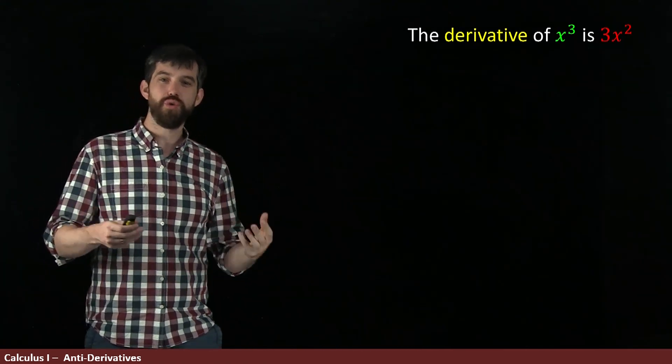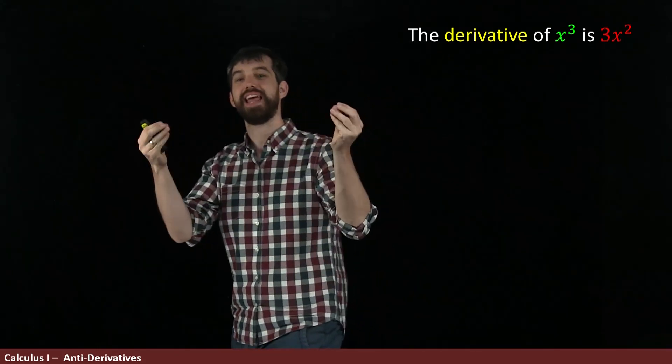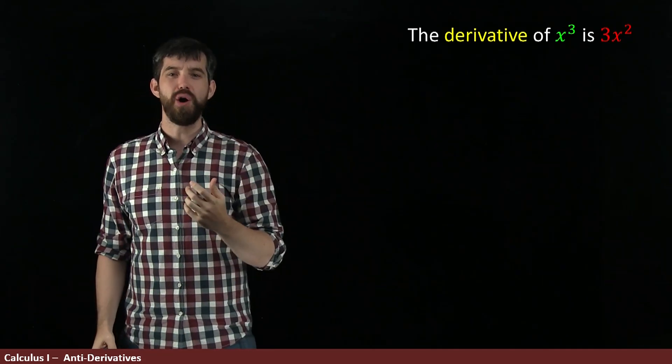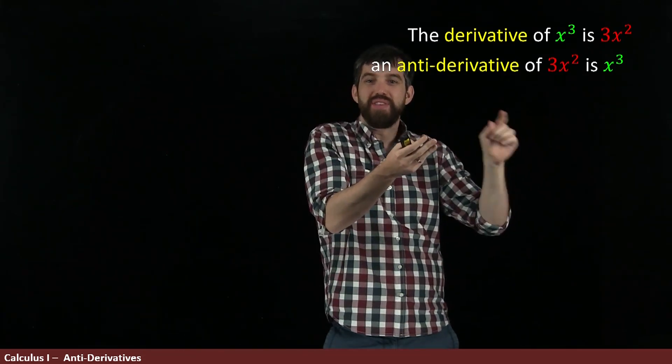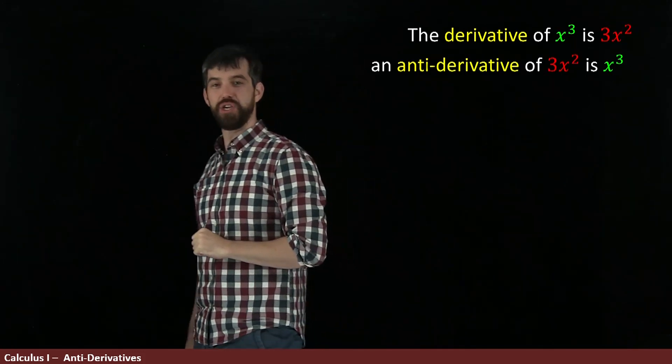Now, this gives you a relationship between the x cubed and 3x squared, and I want to take that relationship and turn it on its head. I'm going to talk about something called an antiderivative. So I'm going to say that the antiderivative is the other way around. The antiderivative now of the 3x squared is the x cubed.